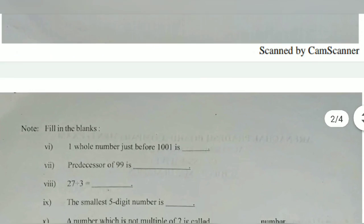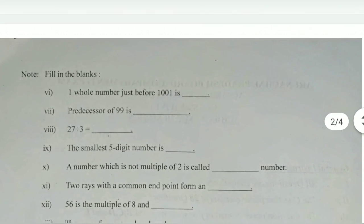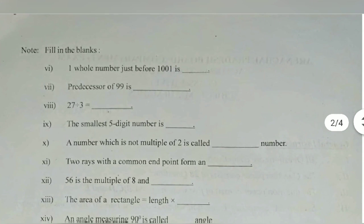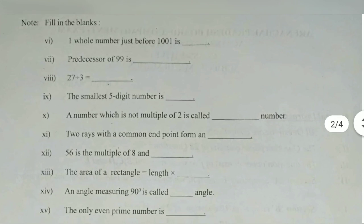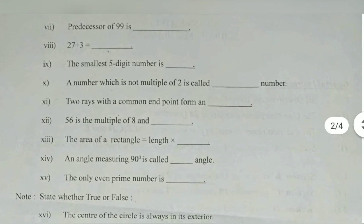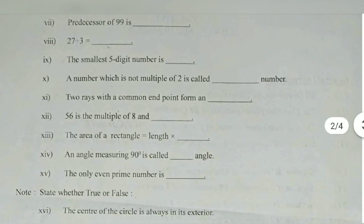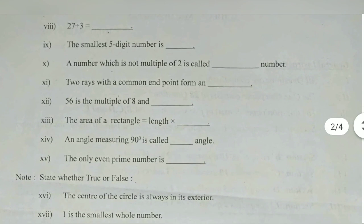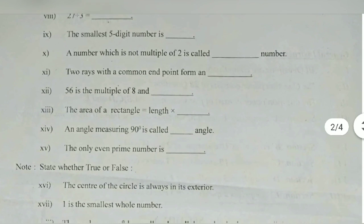Next question is fill in the blanks. One whole number just before 1001 - that is 1000. The predecessor of 99 is 98. 27 divided by 3 is 9. 9 raised are 27. The smallest 5 digit number is 99,999. Which number is not multiple of 2 is called odd number.